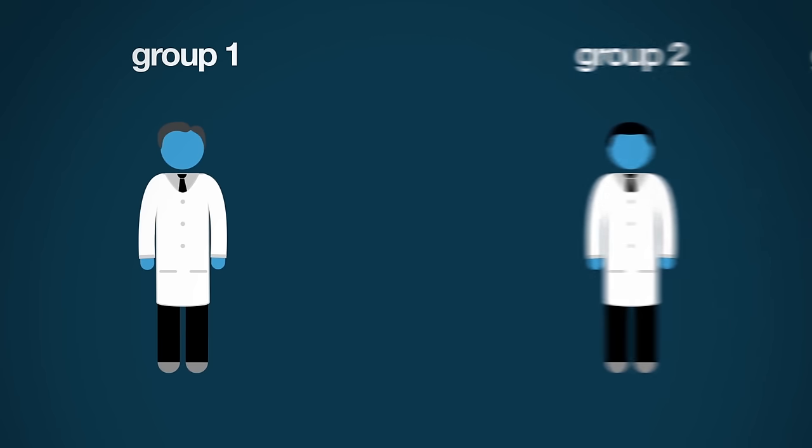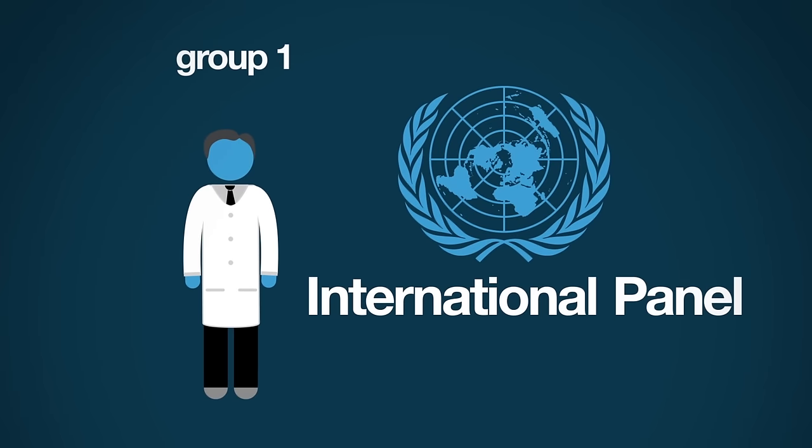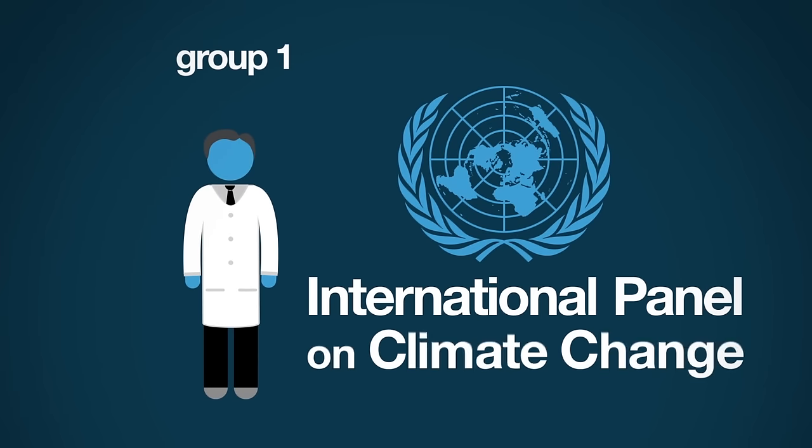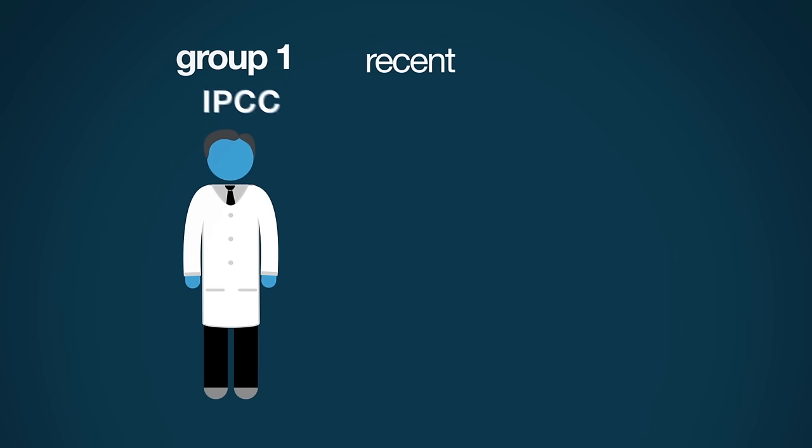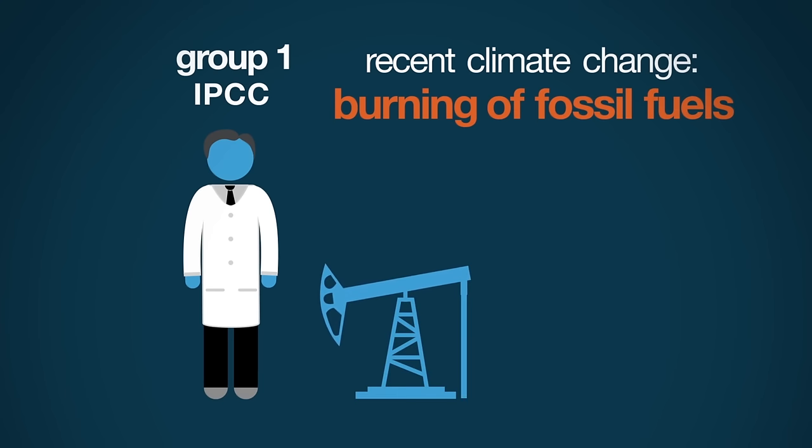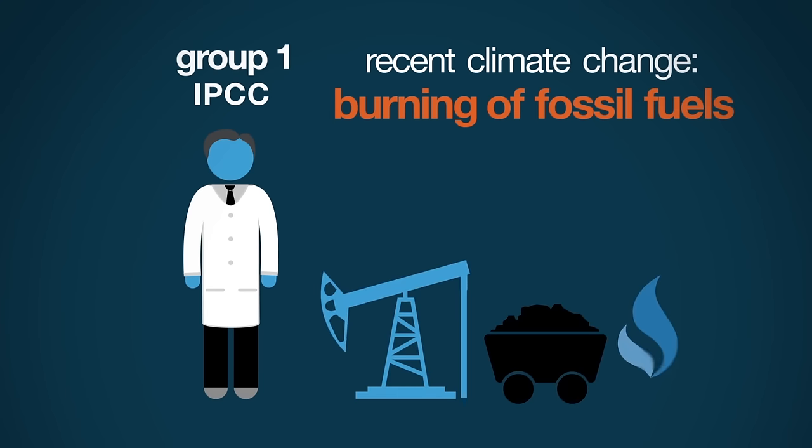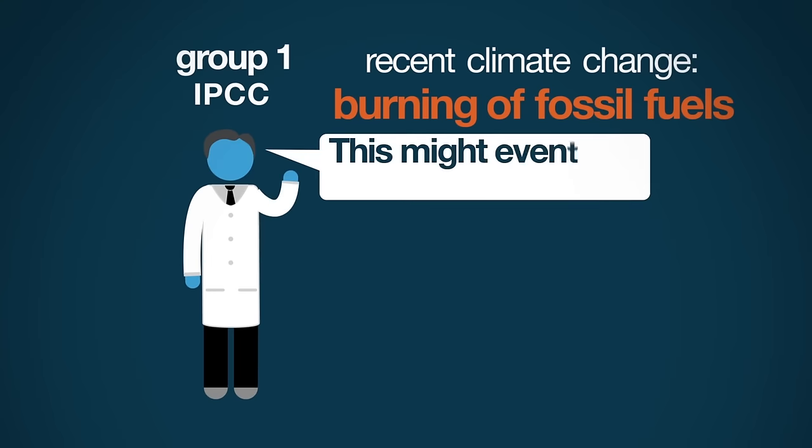Group one is associated with the scientific part of the United Nations International Panel on Climate Change, or IPCC Working Group One. These are scientists who mostly believe that recent climate change is primarily due to man's burning of fossil fuels—oil, coal, and natural gas. This releases CO2, carbon dioxide, into the atmosphere, and they believe this might eventually dangerously heat the planet.